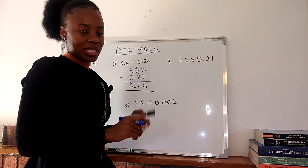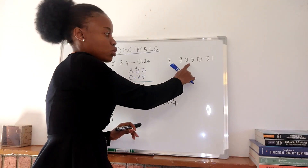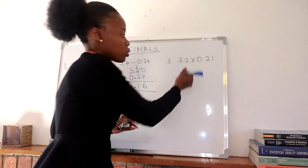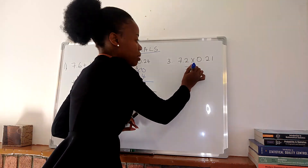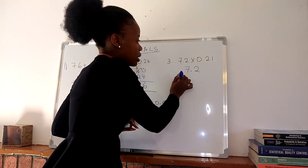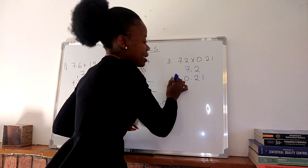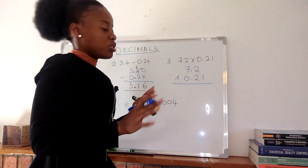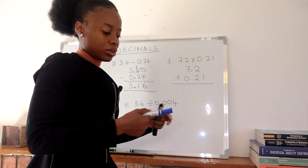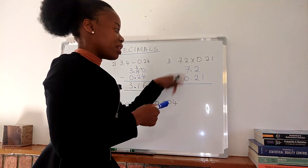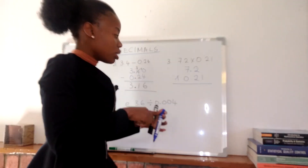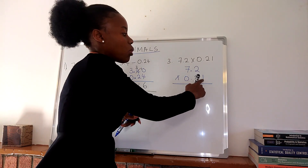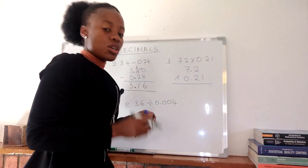We have 7.2 times 0.21. When you are multiplying, you don't need to write the numbers in a line. We'll see how we're going to handle the decimal point at the end after we multiply.